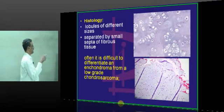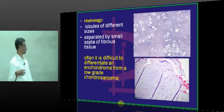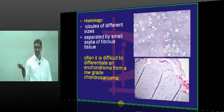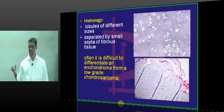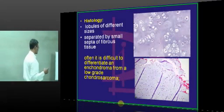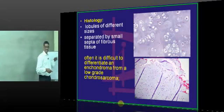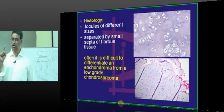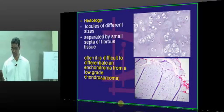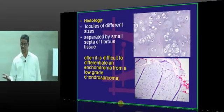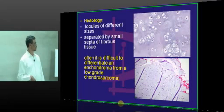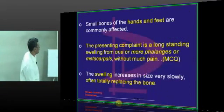The lobules are of different sizes, separated by small septa of fibrous tissue. It is often very difficult to differentiate between chondrosarcoma and enchondroma, because both almost represent endochondral ossification. The distinction depends on the virulence, rapidity, and invasion of nearby surrounding structures.